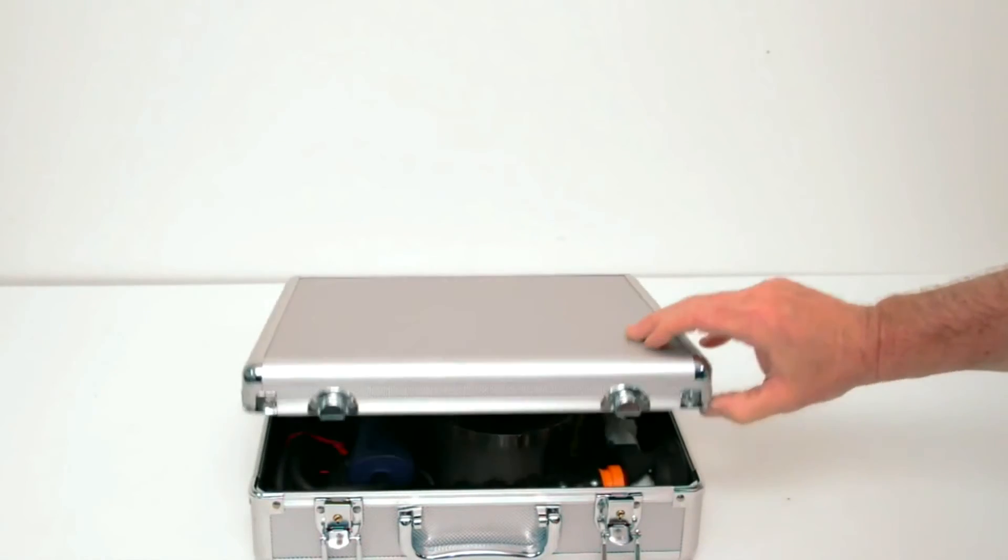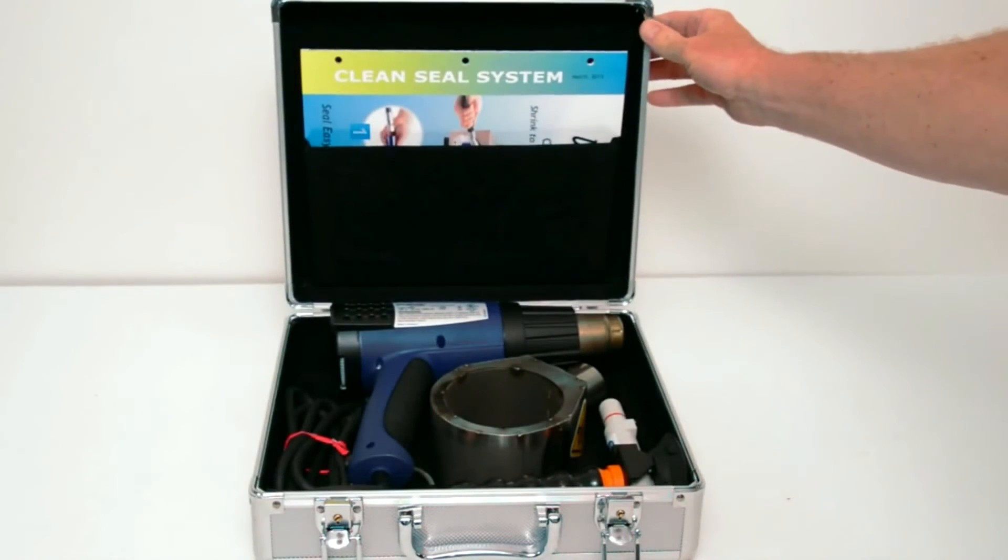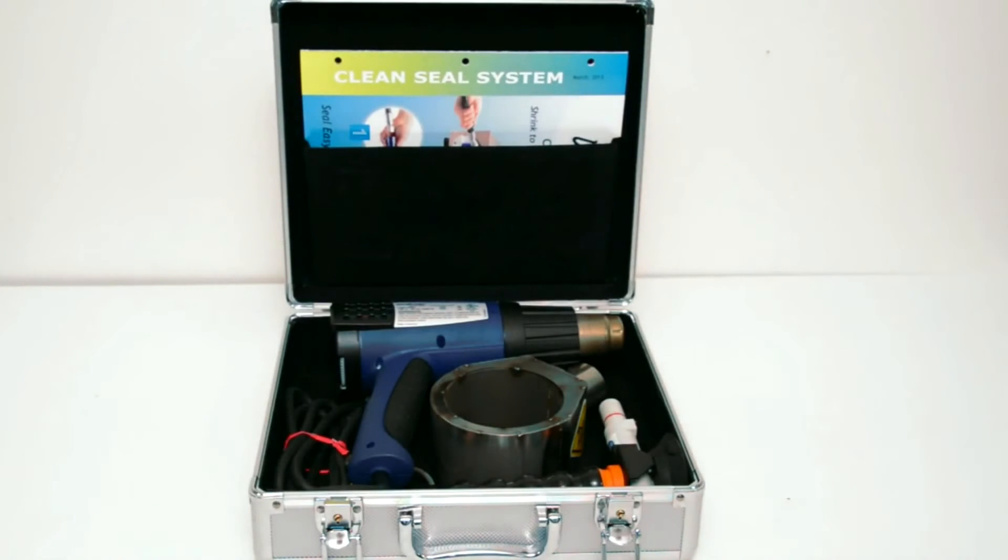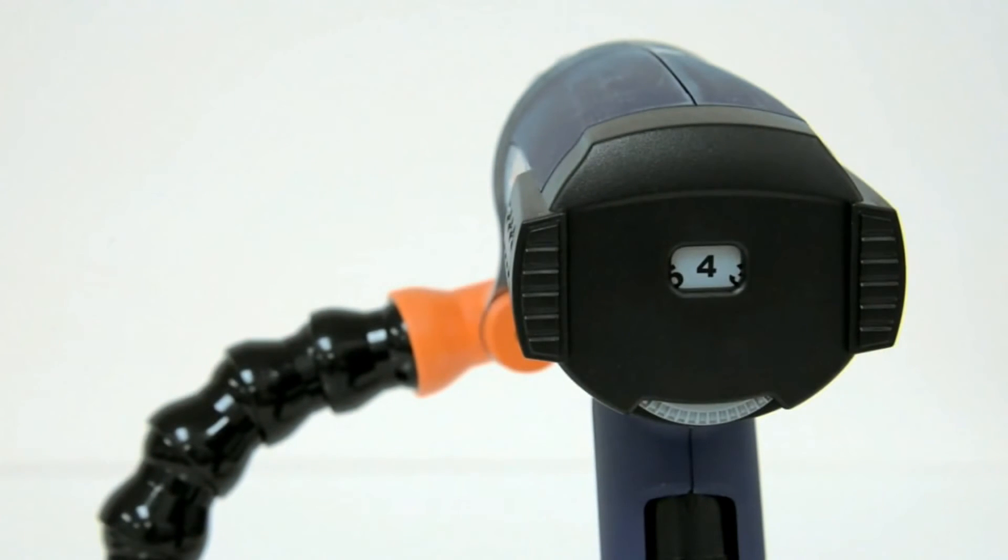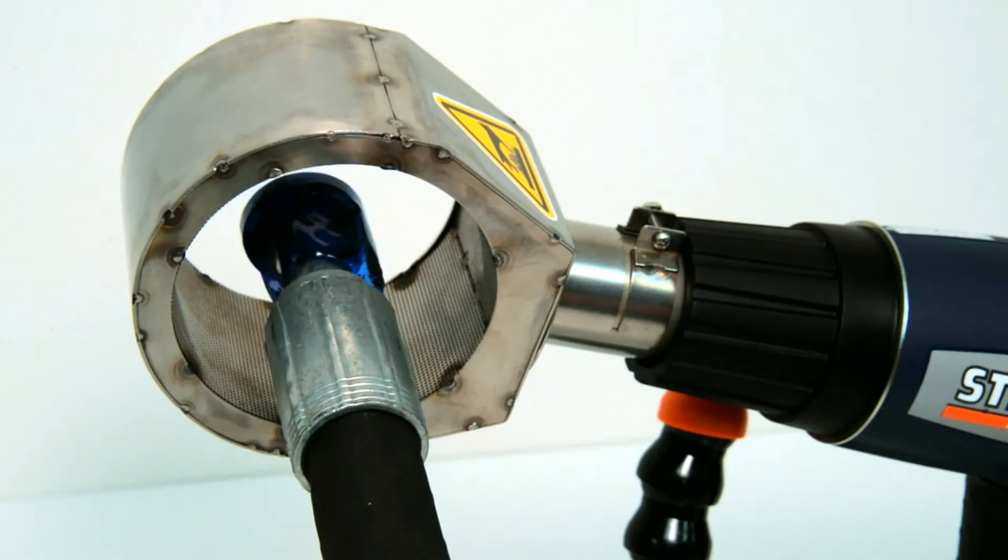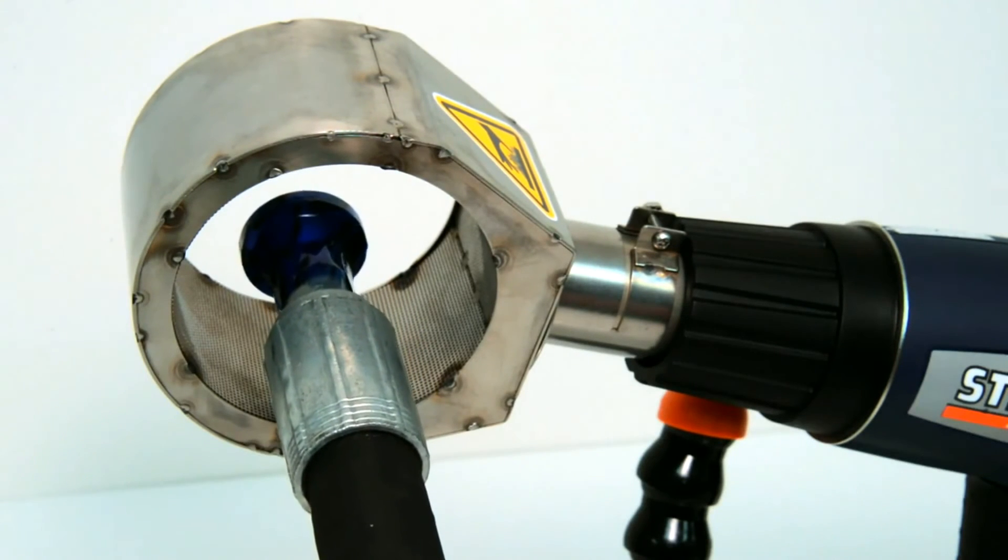The UCHL 1910E heat gun comes complete in kit form. The temperature setting is preset to number 4 on the temperature dial, which is approximately 325 degrees Fahrenheit or 165 degrees Celsius.